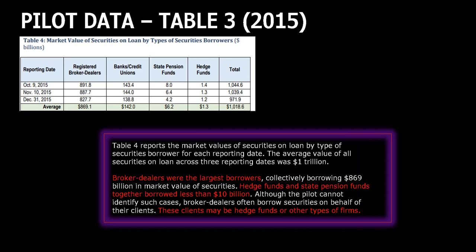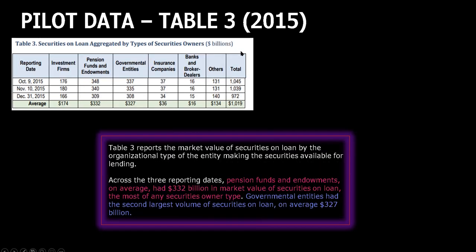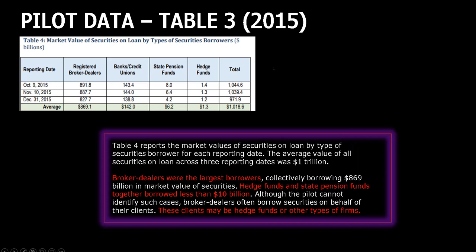Table 4: market value of securities on loan by types of securities borrowers. These are your borrowers. Broker dealers — our favorite friends — were the largest borrowers, collectively borrowing 869 billion in market value of securities over a three-day period in 2015. Hedge funds and state pension funds together borrowed less than 10 billion. Now you see just how deep in it they are.